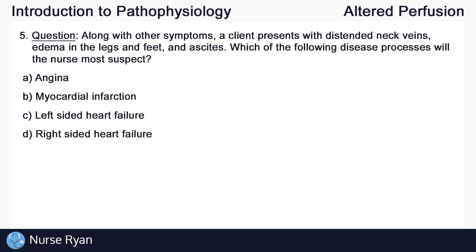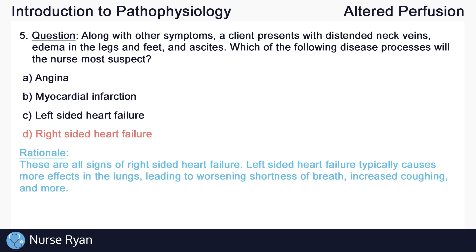Question number five. Along with other symptoms, a client presents with distended neck veins, edema in the legs and feet, and ascites. Which disease process will the nurse most suspect? The answer is D — right-sided heart failure. Left-sided heart failure typically causes more effects in the lungs, leading to worsening shortness of breath and increased coughing. Try to remember L for left and lungs, and R for right and the rest of the body.